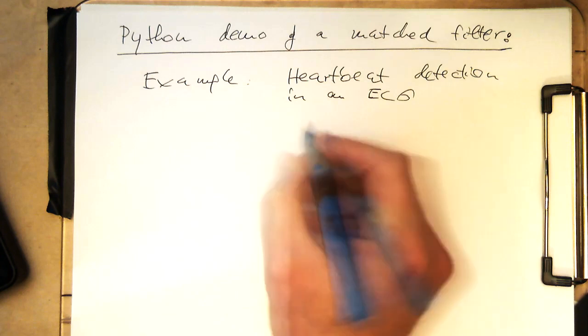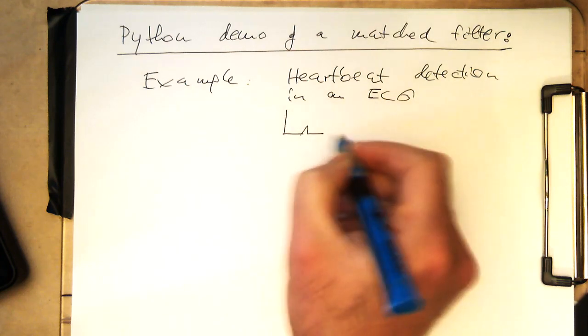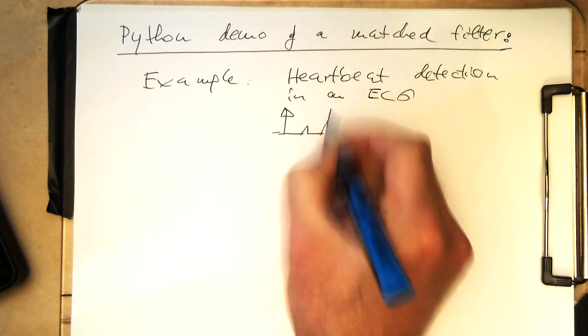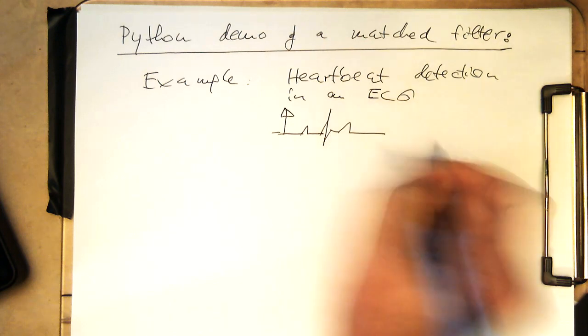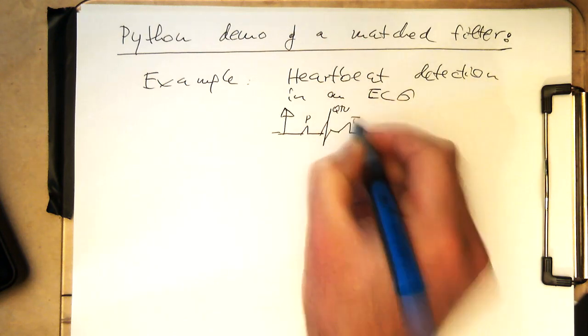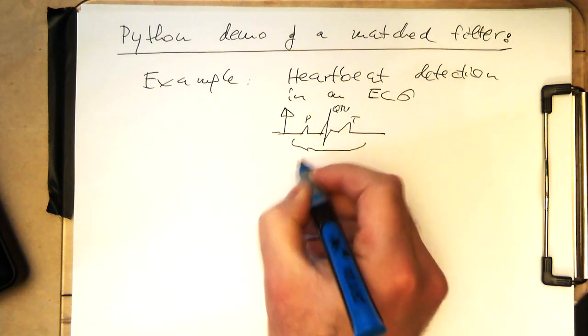So the heartbeat in an ECG, if this is here our axis, then this looks roughly like this. So that's a P wave, that's a QRS complex, and that's a T wave here, and so we would like to detect that.